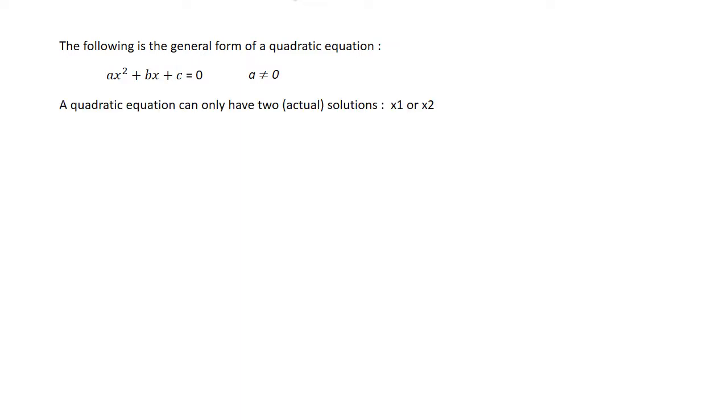A quadratic equation can only have two actual solutions, x1 or x2. x1,2 equals minus b plus or minus square root b² minus 4ac divided by 2a.